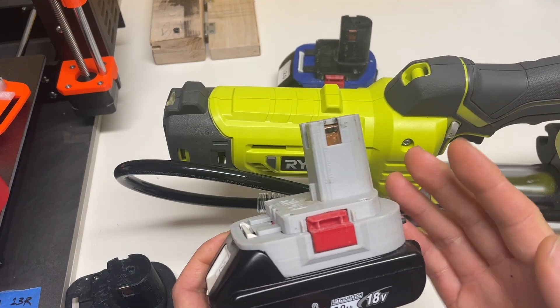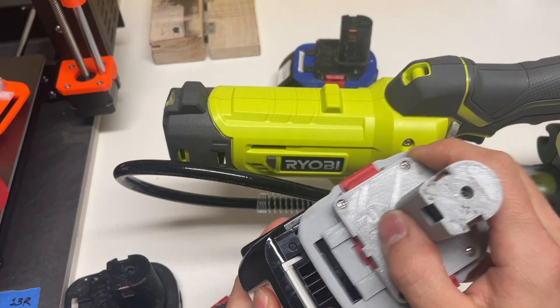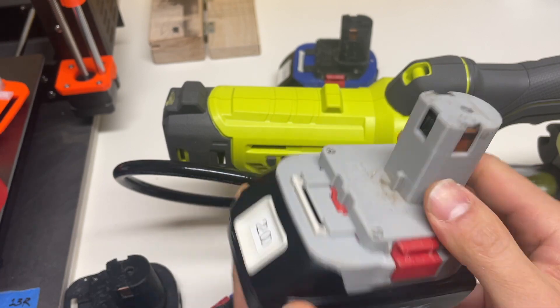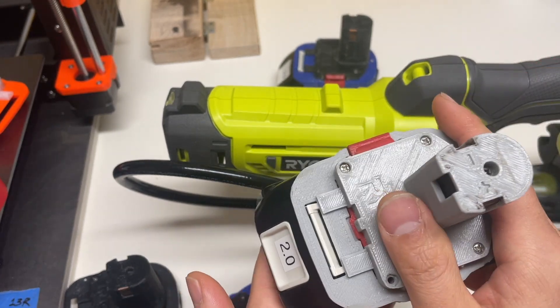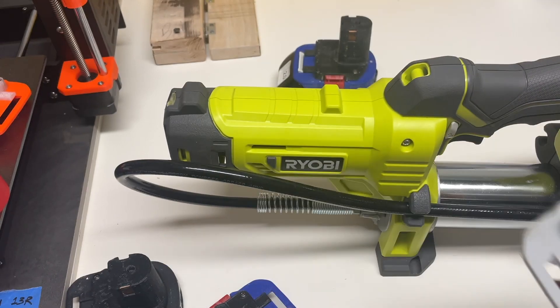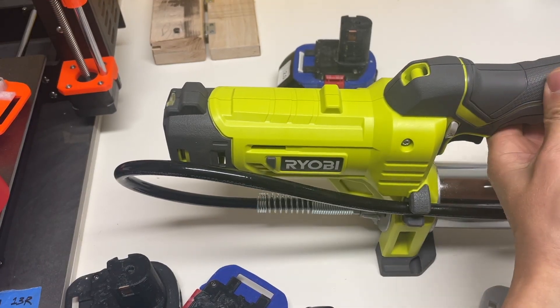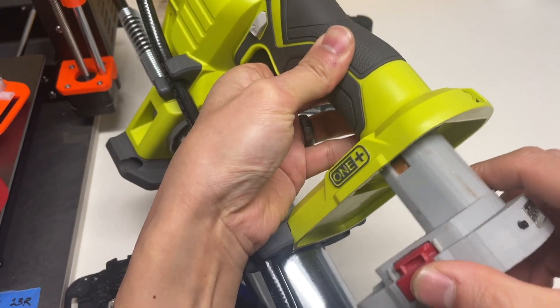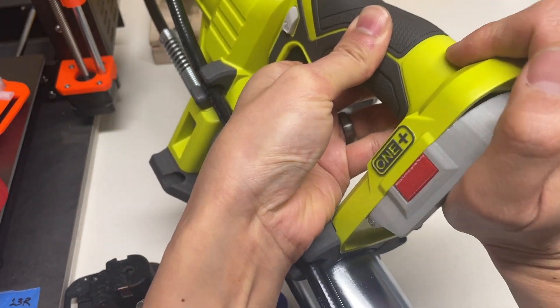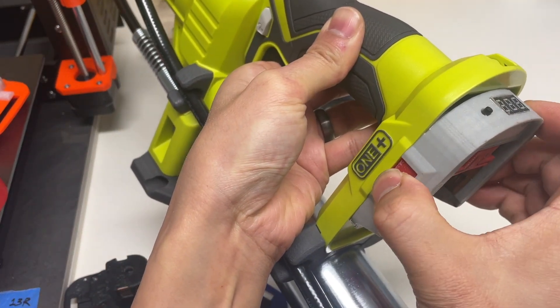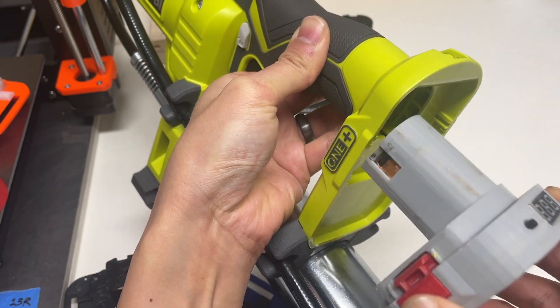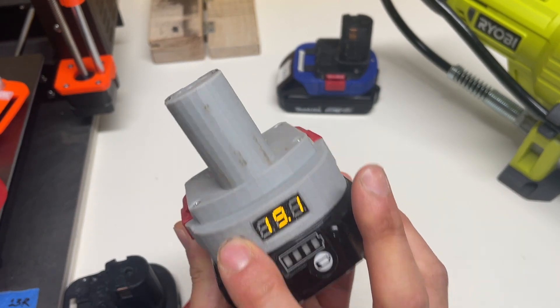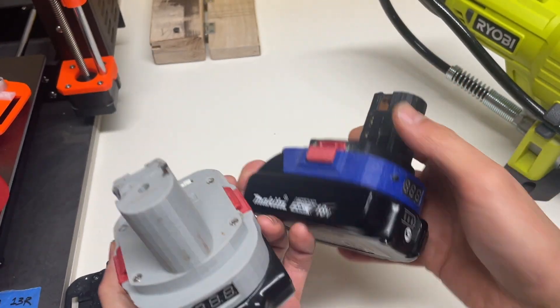The cool thing about this battery adapter is that it's modeled very well. So it slides onto the Makita battery nice and smooth and it locks in. And on the Ryobi tools it snaps in perfectly as well. And it even has these side clips. It even has a voltmeter on the back here so you can monitor the battery levels.